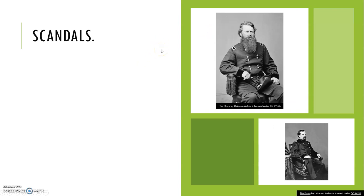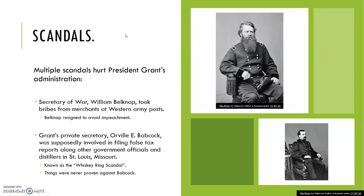President Grant had a couple of scandals during his second term. Secretary of War William Belknap took bribes from merchants at Western Army posts — Belknap resigned to avoid impeachment. Grant's private secretary, Orville E. Babcock, was supposedly involved in filing false tax reports with other government officials and distillers in St. Louis, Missouri, known as the Whiskey Ring Scandal. Things were never proven against Babcock, but it didn't make Grant's administration look favorable.